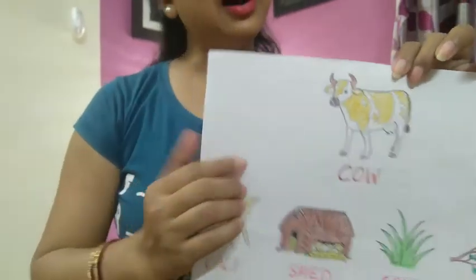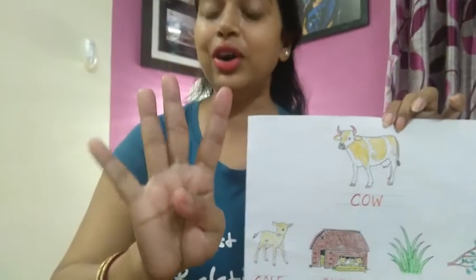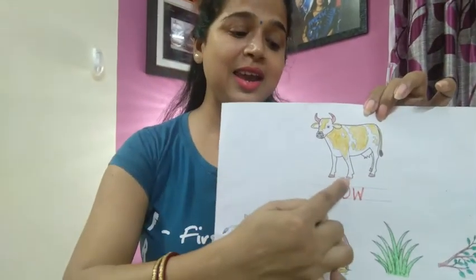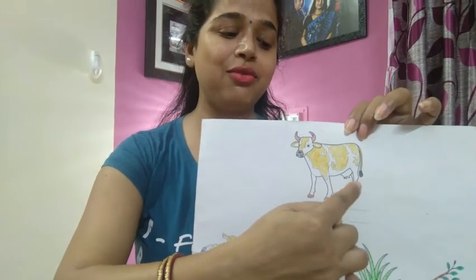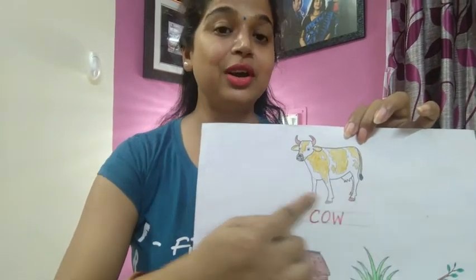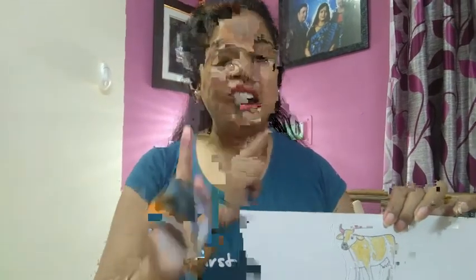Now, cow has four legs — one, two, three, four. And cow has two ears. And cow has two eyes. It also has two horns and one tail.